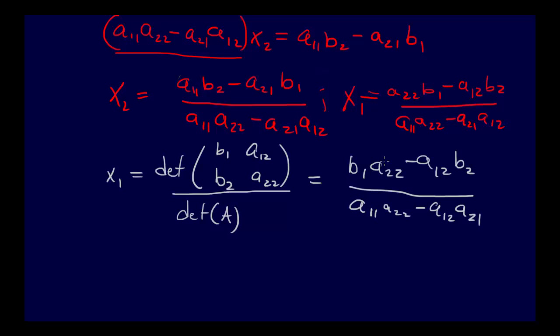It's really interesting here. We have x1, this is exactly the same. And for x2, we get the exact same. We have the determinant of a11, a21, b1, b2 over the determinant of A, and that ends up being exactly equal to what we have here.